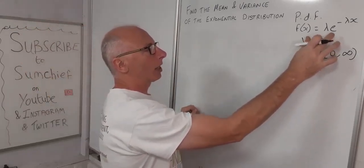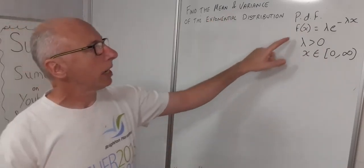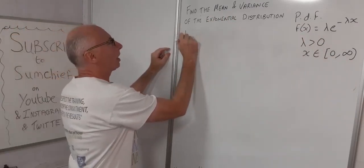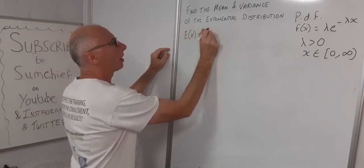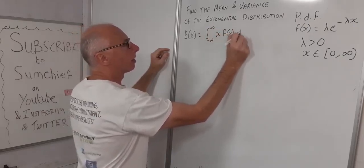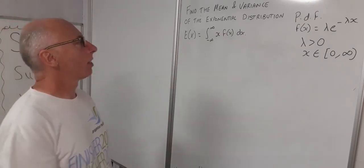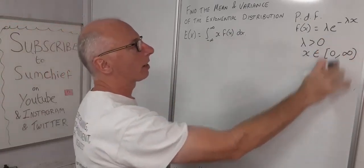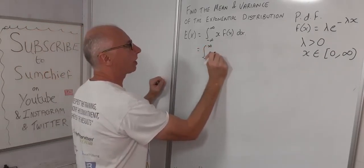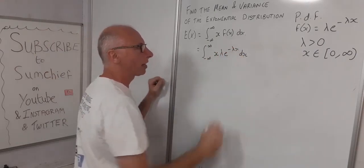The next thing we need to work out is how to find our expectation, i.e. our mean. To find the mean of the exponential distribution, we use E[X] equals the integral from negative infinity to infinity of x·f(x) dx. So we have the integral of x times λe^(-λx) dx.